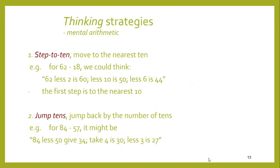Further thinking strategies for mental computation — mental arithmetic — is 'step to 10': move to the nearest 10. If we're trying to subtract 18 from 62, we could see that 2 from 62 leaves 60. Another 10 brings you to 50, so we've taken away 12 so far. We need to take away 18 altogether, so there's another 6 to go, and 6 taken away from 50 leaves 44.